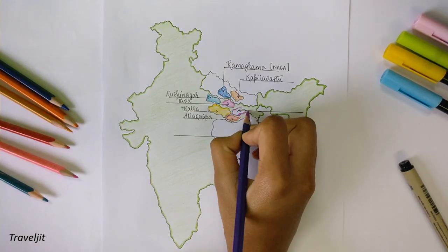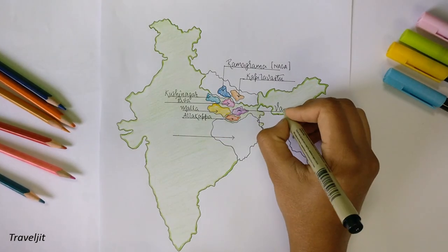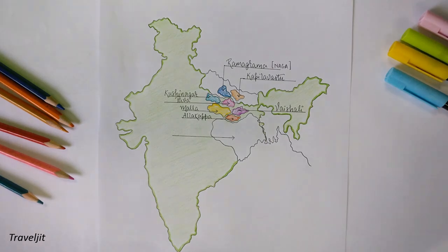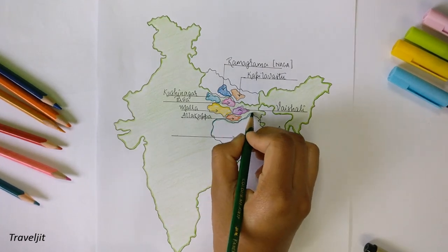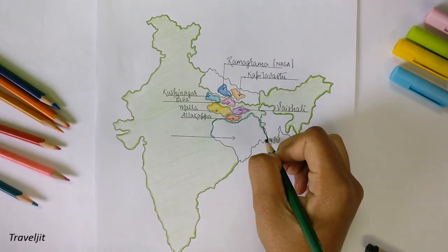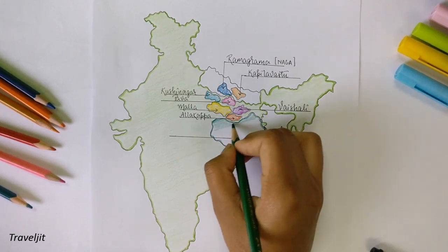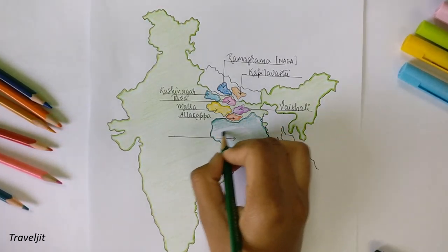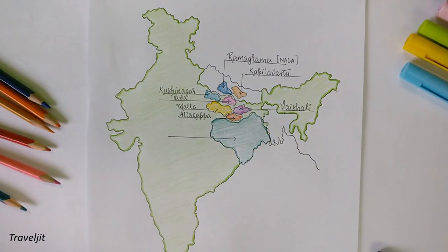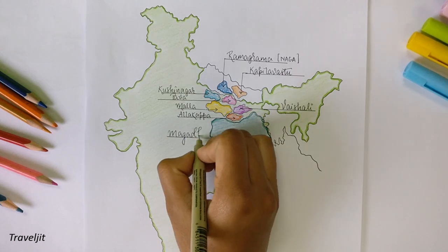His relics were enshrined and worshipped in stupas by the royals of eight countries: Kapilavastu, Ramagraha, Kushinagara, Pava, Mallas, Alakappa, Vaishali, and Magadha.